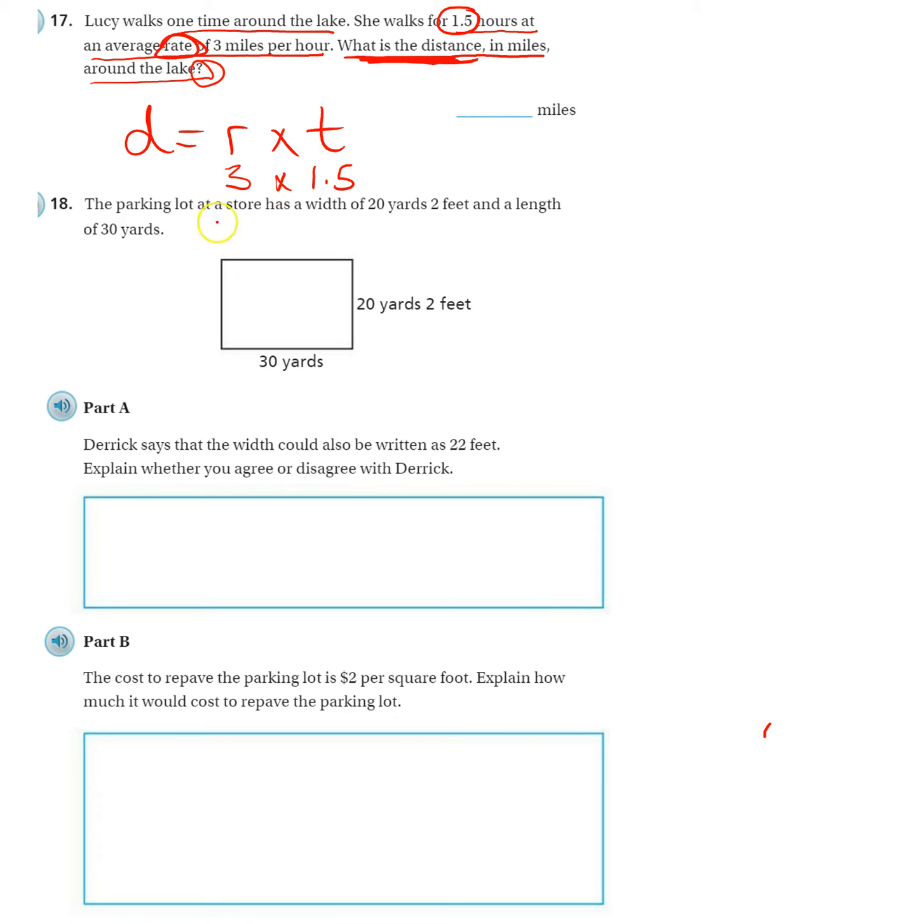All right, number 18. The parking lot at a store has a width of 20 yards, 2 feet, and a length of 30 yards. And they set it up for us here. 30 by 20 and 2 feet. Part A says,